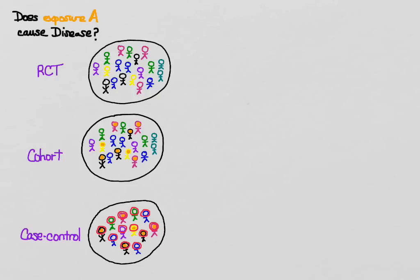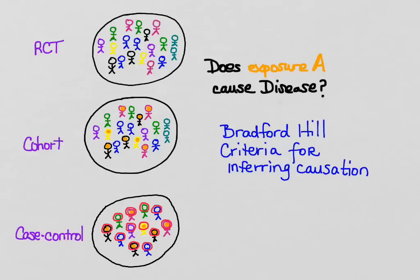So we need a set of criteria to use with cohort and case control studies for deciding when we have good evidence for causality — and actually this isn't just for cohort and case control, it's for all of them. What I'm going to talk about now are the Bradford Hill criteria for causation. There are nine of these criteria for inferring causation, and I am going to tell you about the most important ones.